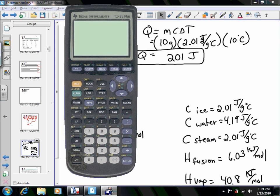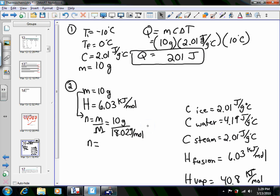Turn our calculator on. So 10 divided by 18.02 gives us 0.555 moles. So we'll have 0.555 moles.